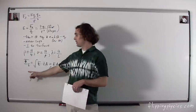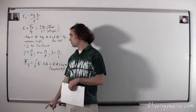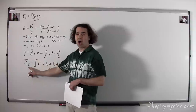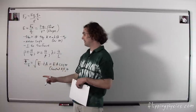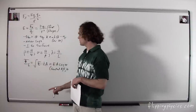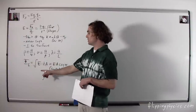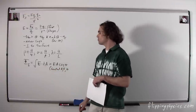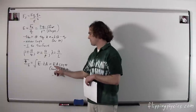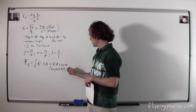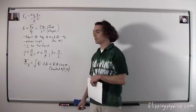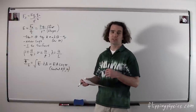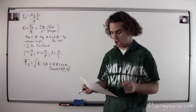Electric flux — the symbol is an uppercase phi with a subscript uppercase E for electric field. It is the integral of the electric field dot product with respect to the area. Therefore, we have E·A·cosθ if there's a constant area, electric field, and angle. The electric flux leads us to Gauss's law.